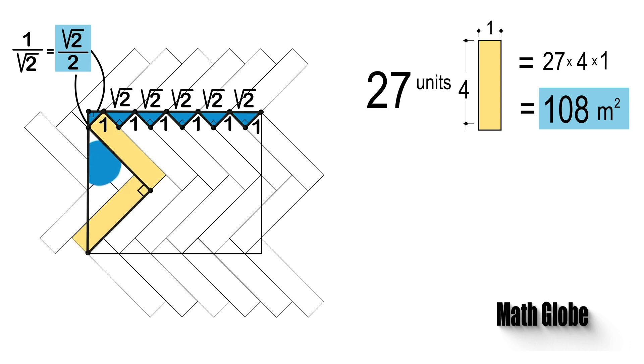Doing the same analysis for the shorter side, we have the blue isosceles right triangle having side lengths of 4 units and the hypotenuse shown.